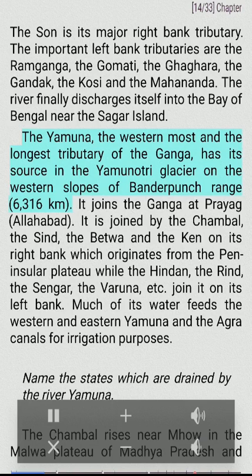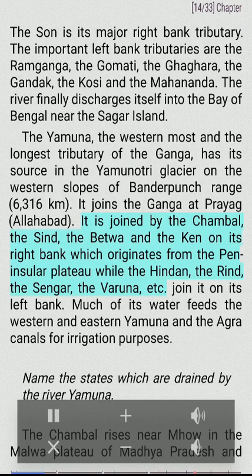The Yamuna, the westernmost and the longest tributary of the Ganga, has its source in the Yamunotri glacier on the western slopes of Bandarpunch range (6,316 meters). It joins the Ganga at Prayag (Allahabad). It is joined by the Chambal, the Sindh, the Betwa, and the Ken on its right bank — originating from the peninsular plateau — while the Hindon, Rind, Sanger, Baruna, etc. join it on its left bank. Much of its water feeds the Western and Eastern Yamuna and the Agra canals for irrigation.